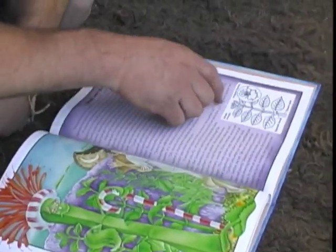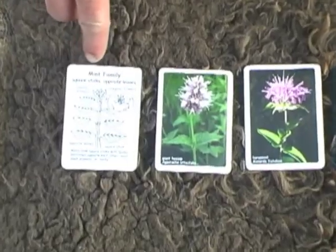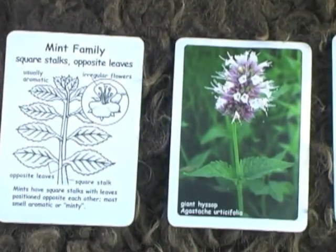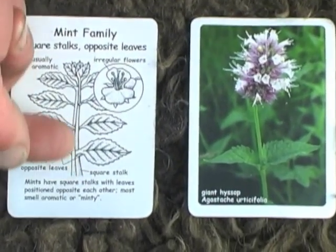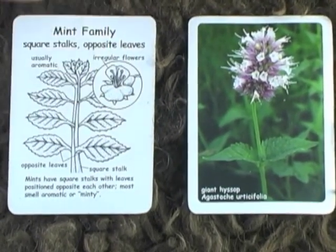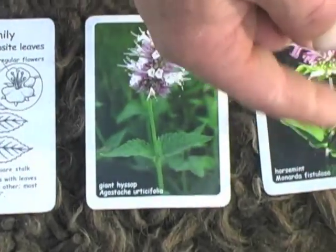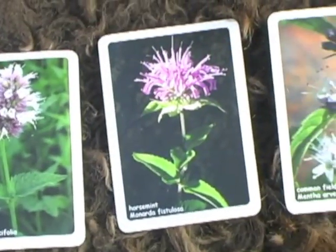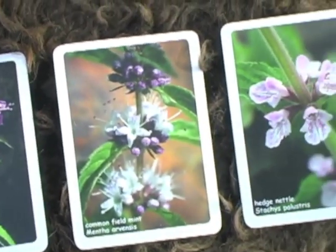The first family we're going to look at is the mint family. The key pattern for the mint family is that the stems are square — they have square stems and opposite leaves. You'll see that on any of the mints that you find. Mints also tend to be very aromatic or minty.